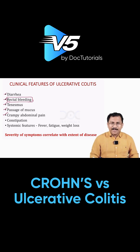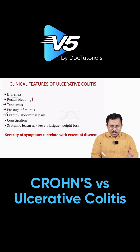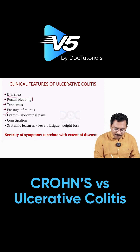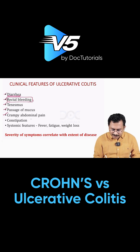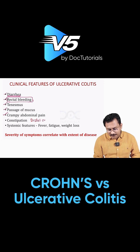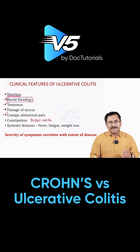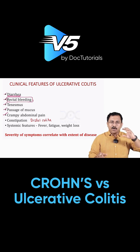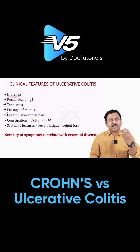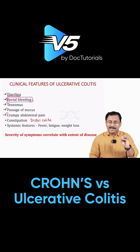Crampy abdominal pain may be there, and constipation. Usually what happens is diarrhea, but when there is a distal colitis — a proctitis or proctosigmoiditis — the proximal motility might be reduced, and in that case you can have constipation. Otherwise, expect diarrhea.